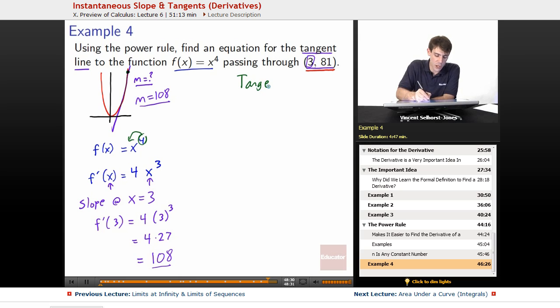So, our tangent line is going to wind up using this slope, m equals 108. So, any line at all can be described by slope intercept form. It's a really good form to have memorized. y equals mx plus b. You always want to keep that one in your back pocket. Always useful.